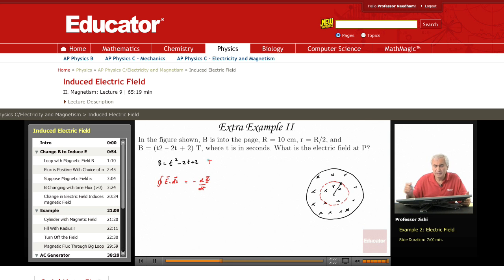It also cannot be along the axis of the cylinder, again, because E·ds will be zero. So E has to be tangential. Since it's tangential, this is just E times 2πr, as we have seen before.